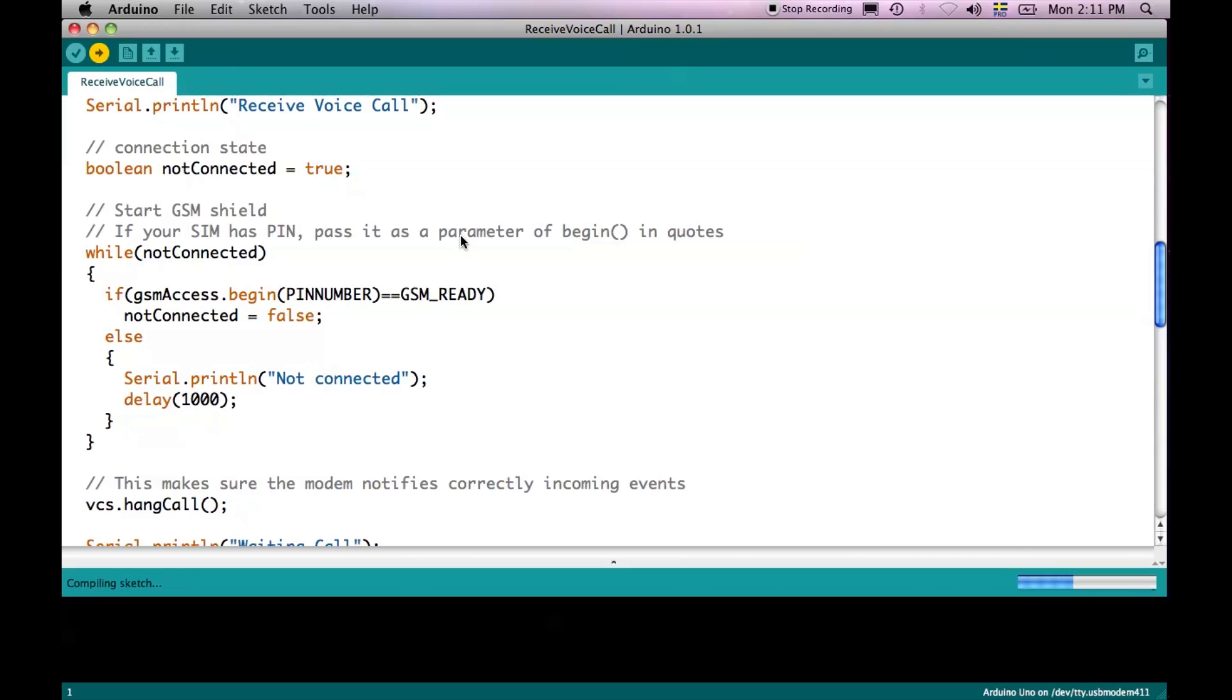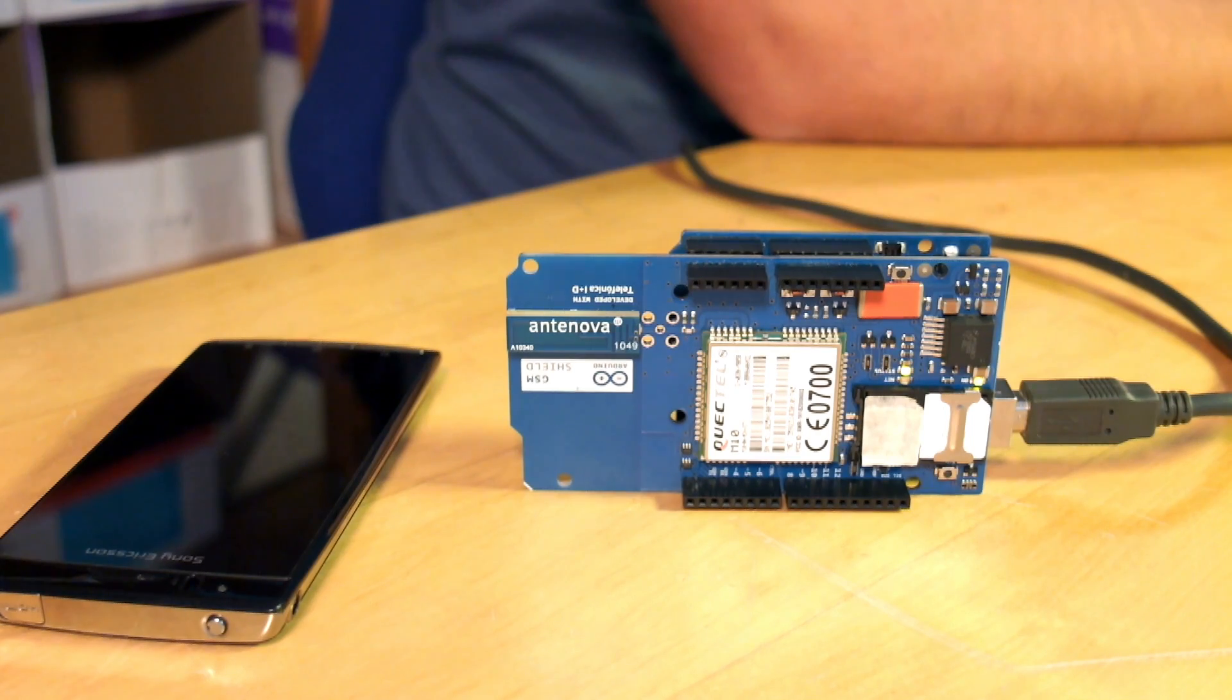This example, what we'll be doing is to set up the GSM connection and put the shield to wait for a call. And when a call is received, it will be informing you over the serial port monitor on the different stages of the call. You can actually interact with the serial port monitor to answer the call from the line on the monitor.